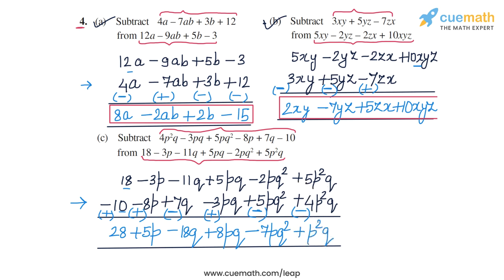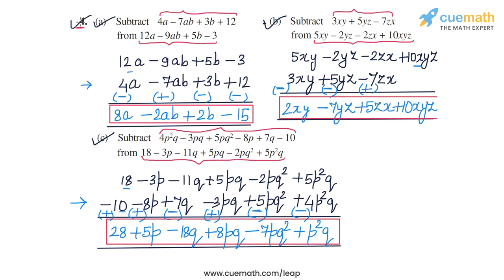So the expression obtained after subtraction is 28 plus 5p minus 18q plus 8pq minus 7pq² plus p²q. This is the answer for part c, and with this we have completed question number 4.